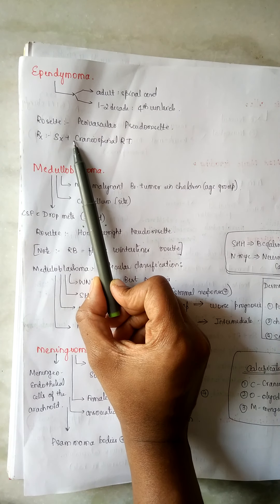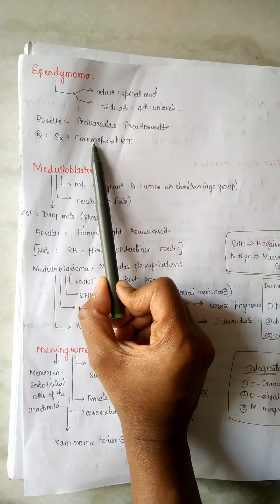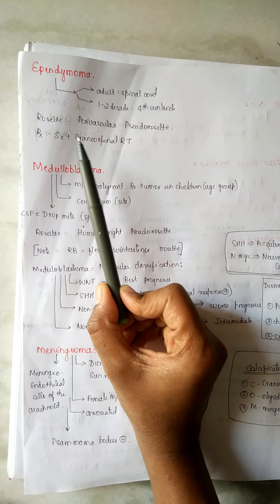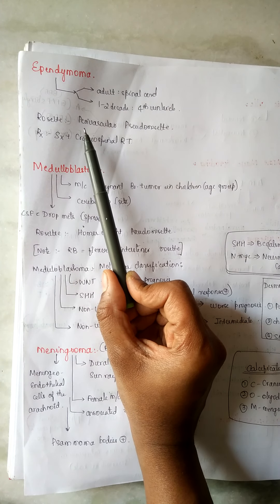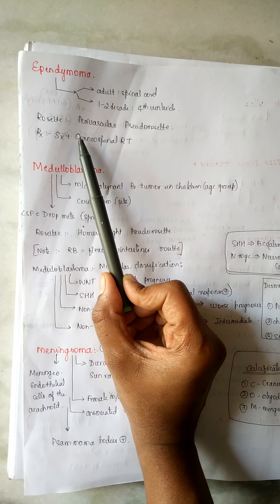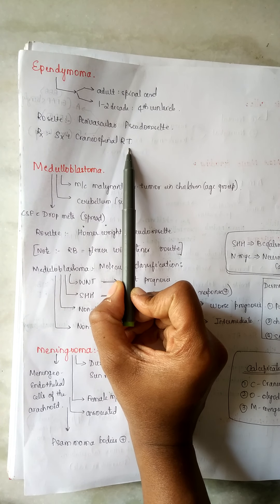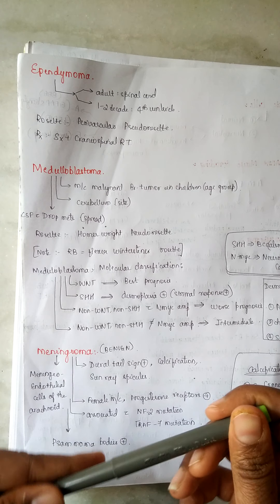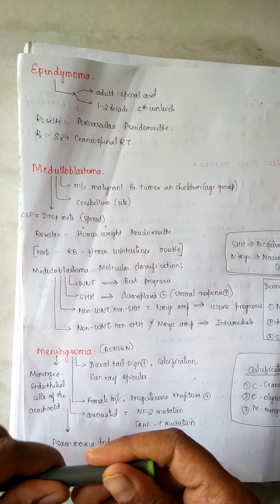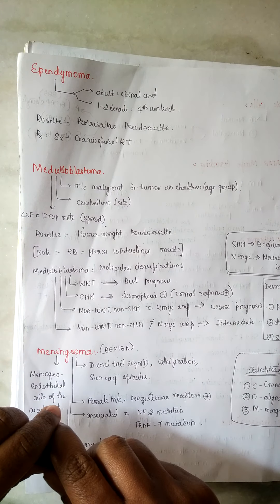The treatment for ependymoma is surgery plus cranial-spinal radiation (cranial-spinal RT), because the lining epithelium continues down the spinal cord.